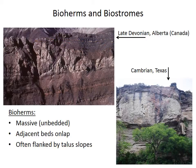Bioherms, because they have relief above the seafloor, are also often flanked by what are called talus slopes — these big, rubbly areas composed primarily of reef debris, broken up corals, and so forth.